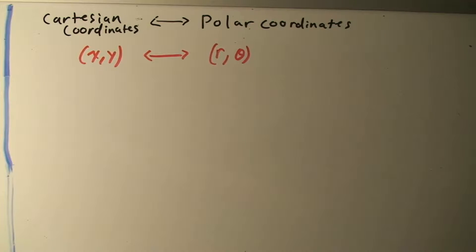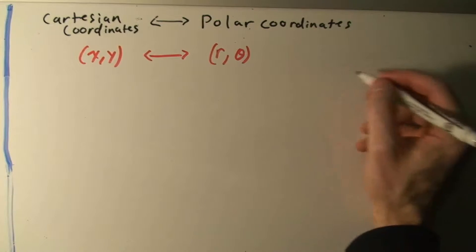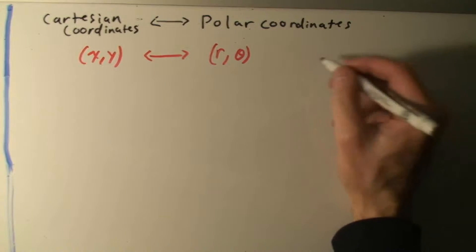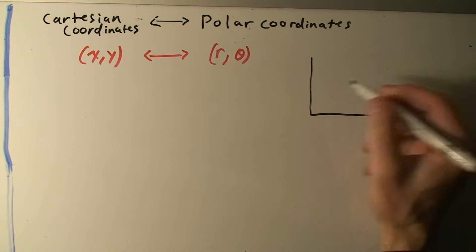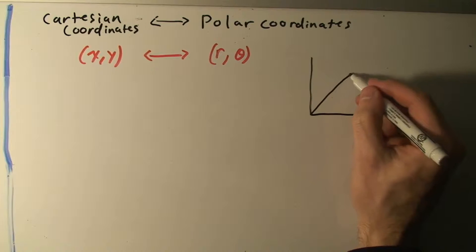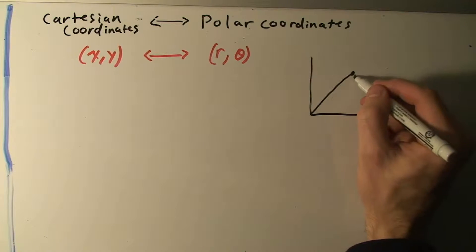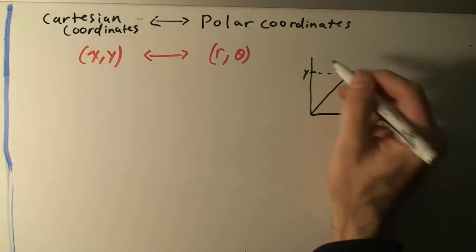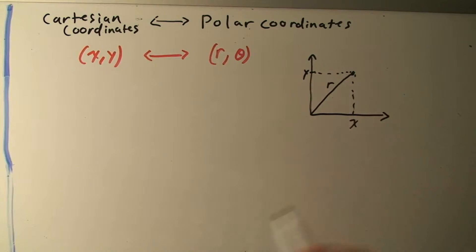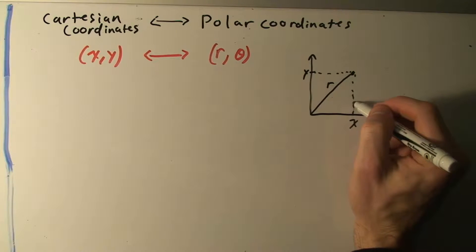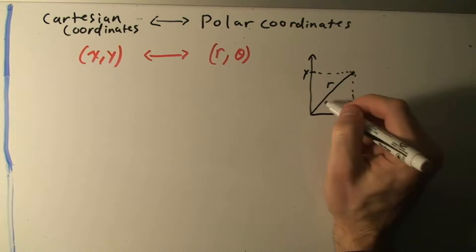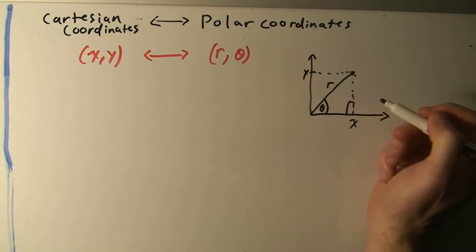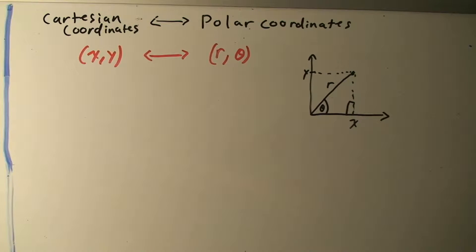Let's draw a simple Cartesian coordinate system. We have a normal x-y plane with some point whose coordinates are x and y. The line from the origin to that point is r, and it makes an angle with the horizontal axis of theta, forming a right triangle.